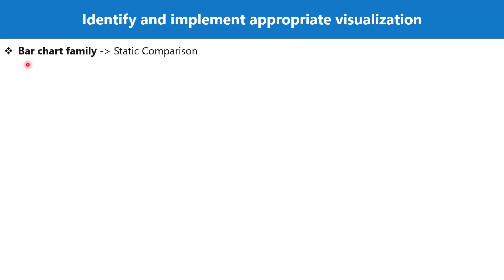Let's have a look at some of the visualizations available inside the Power BI native visual environment. The first family is the bar chart family, which is usually used for static comparison. For example, in our dataset, if we want to compare sales between regions, then a bar chart would be a very good visualization for that.